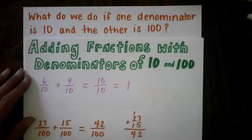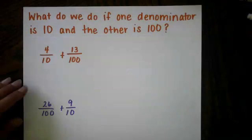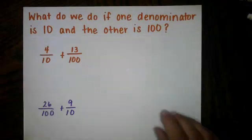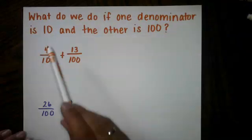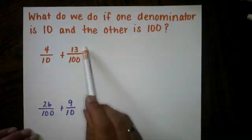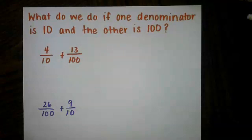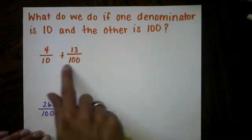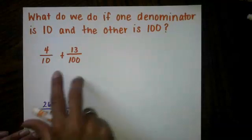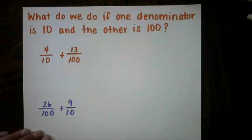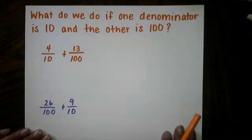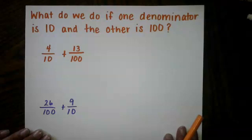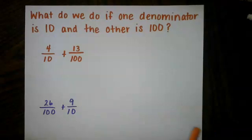What do we do if one denominator is 10 and the other is 100? And that is what I am going to show you right now. So if we look at this addition problem, we have 4 tenths plus 13 one hundredths. So in order to do this, we need to get common denominators. We need to make these fractions have common denominators without changing the value of the fraction itself. Luckily, when we have multiples of 10, it's not that difficult to do.